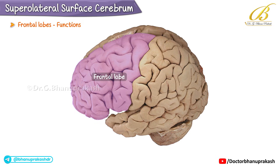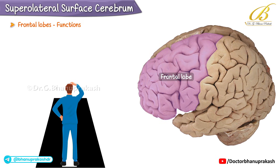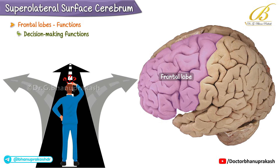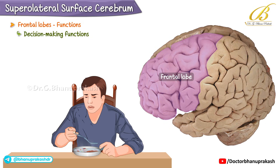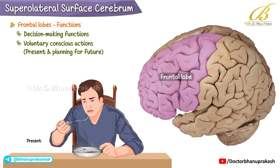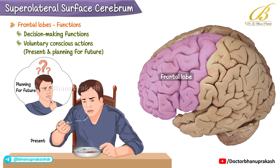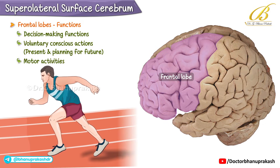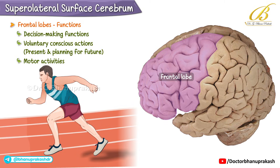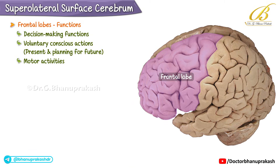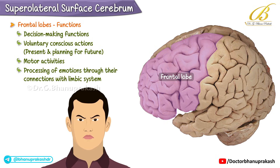The frontal lobes are primarily associated with decision-making functions and are considered the decision-making part of the brain. They play a crucial role in voluntary conscious actions, both in the present and in planning for the future. Motor activities are also closely linked to the frontal lobes. Additionally, certain parts of the frontal lobes are involved in the processing of emotions through their connections with the limbic system.